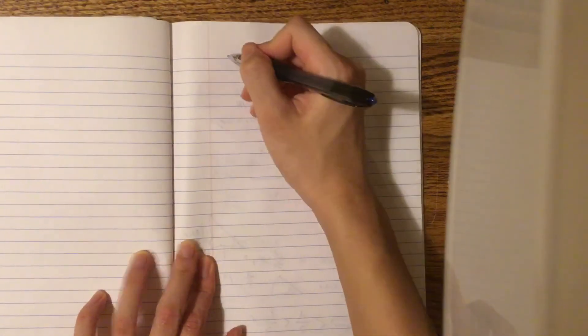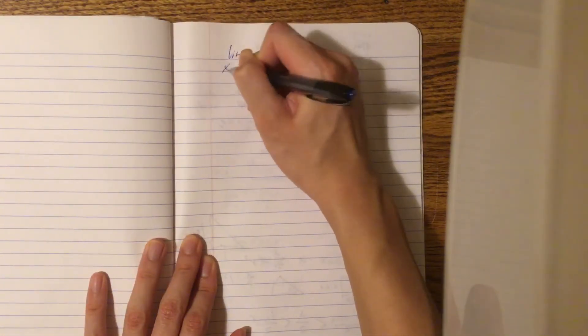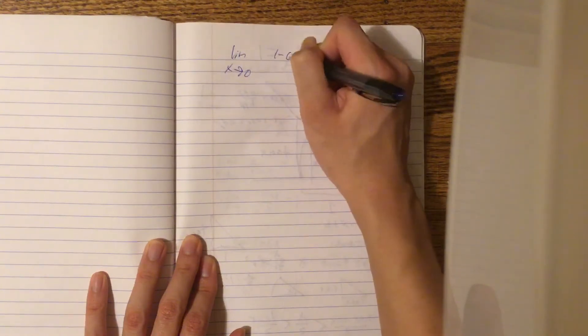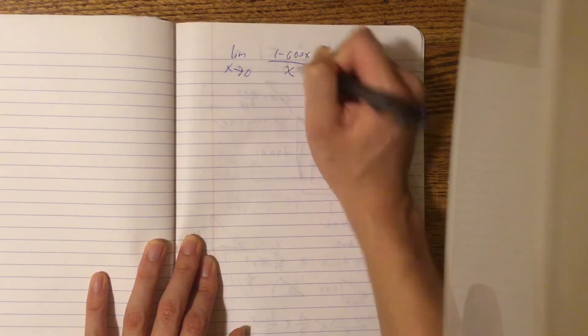For the second part of the video, I'm going to prove what the limit as x approaches 0 of (1 - cos x)/x equals.